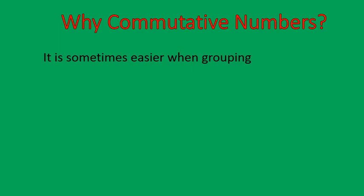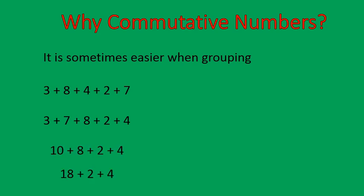It's sometimes easier when you're trying to group numbers together. Here's a question: 3 plus 8 plus 4 plus 2 plus 7. When I'm adding large strings of numbers like that, I tend to group them according to what will give me groups of 10. So I would put my 3 and 7 together, my 8 and 2 together, and leave the 4 to the side. 3 plus 7 is 10, then 10 and 8 is 18, 18 and 2 gives me 20, and I'm left with 24. That's easier than going 3 plus 8 is 11, plus 4 is 15, plus 2 is 17, plus 7 is 24. This is a nice feature — we can move numbers around when we're adding them.